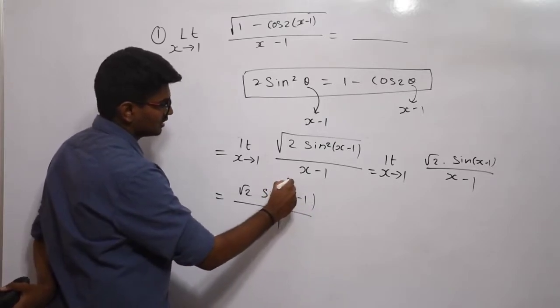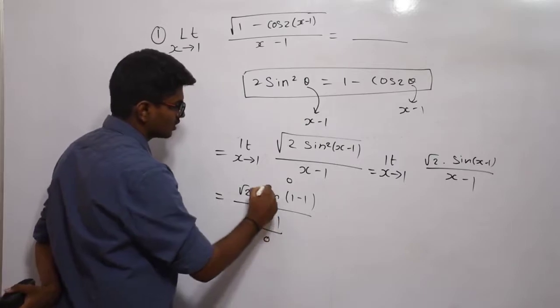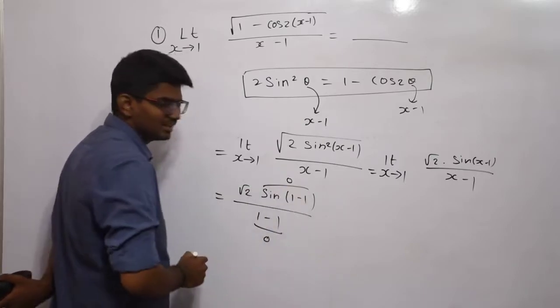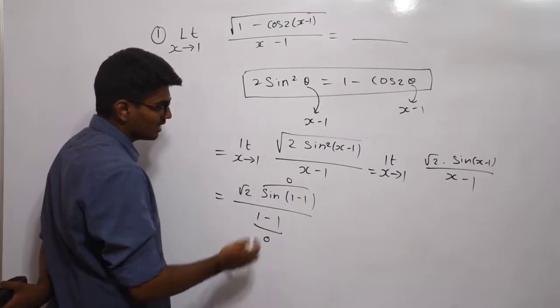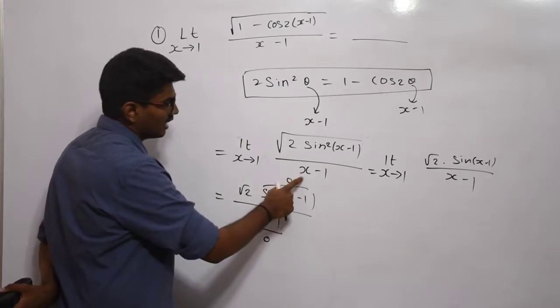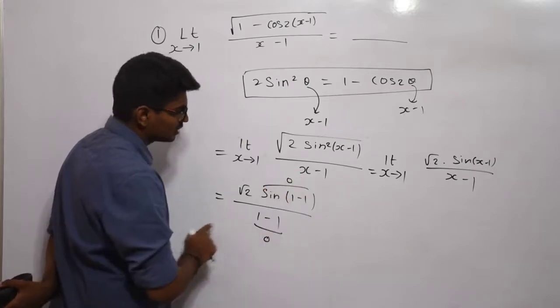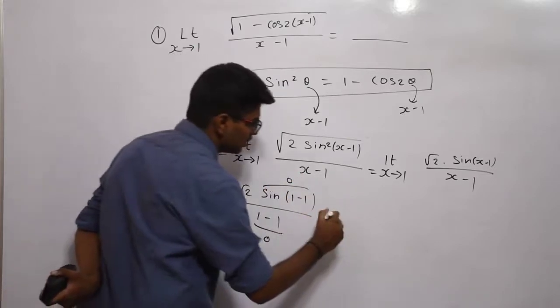Now substituting x equals 1: sin(1 minus 1) is sin 0 which is 0, and x minus 1 is also 0. So it is 0 by 0, which is indeterminate form.